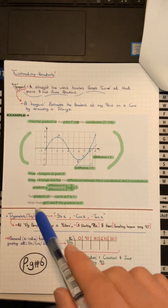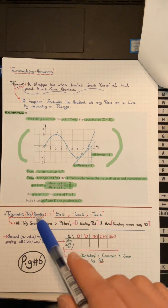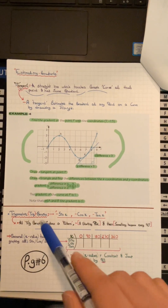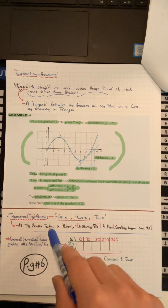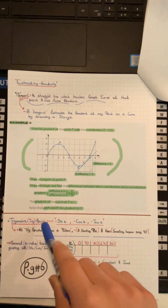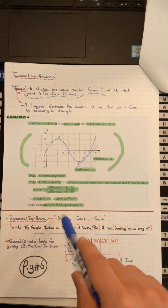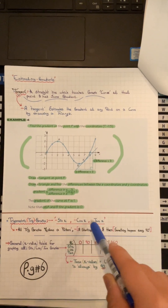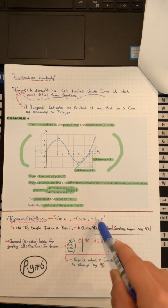Part 2 of Additional Math Cambridge IGCSE Topic 16, where I will continue from trig graphs. In your trig graphs we have three types of graphs: sin x, cos x, and tan x.